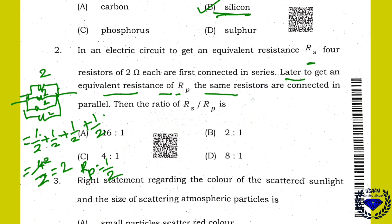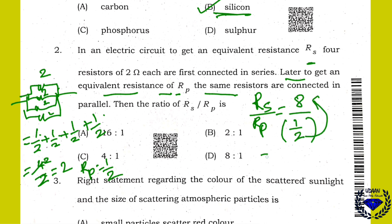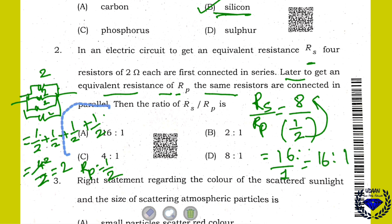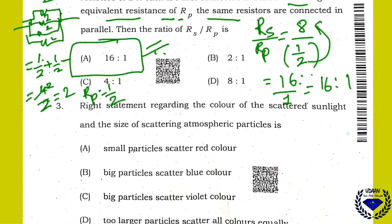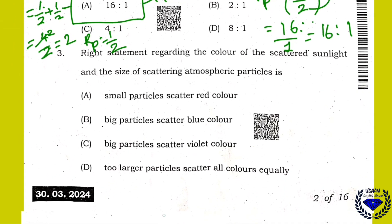They have asked RS by RP. RS we got as 8. RP is half. So 8 divided by 1/2 will give us 16 by 1. That is 16 is to 1 is your answer. The right answer is option A — 16 is to 1. Series becomes 16 and parallel becomes 1. This was the most challenging, somewhat confusing question.